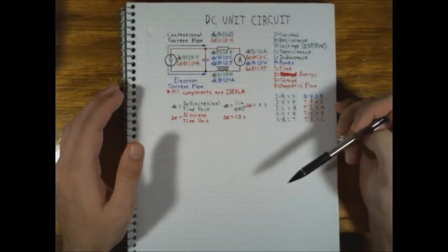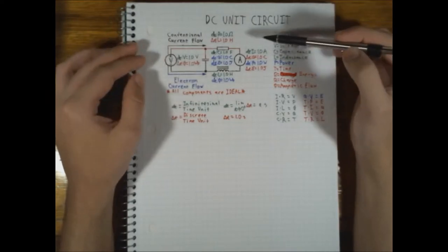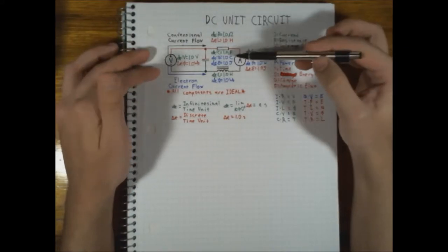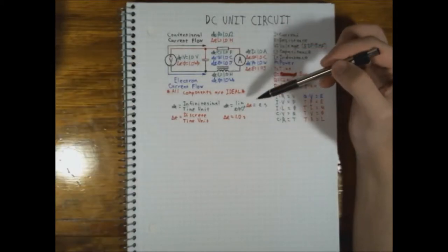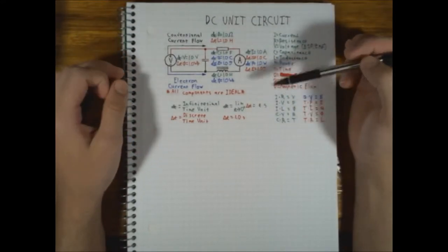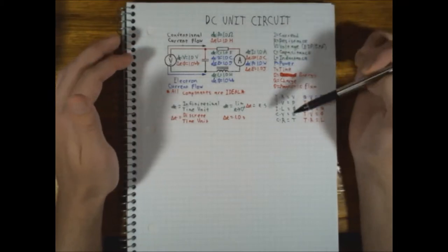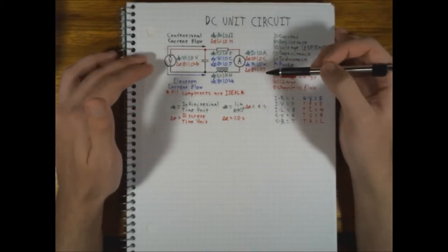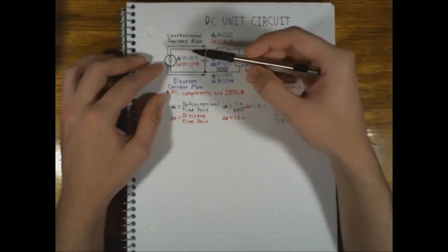I've color-coded the labels to indicate which ones are static properties of various points around the circuit, which are derived instantaneous measurements, and which are calculated as a function of the passage of time. Let's go through the labels that use 'dt' — effectively instantaneous measurements made using the infinitesimal time unit. Over here with our voltage source we have dt of V equals 1.0 volts.